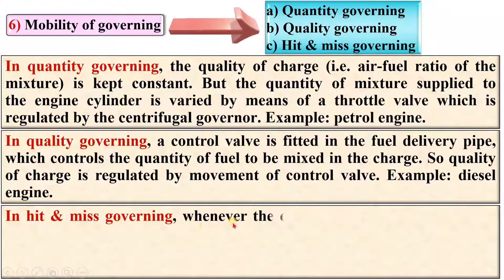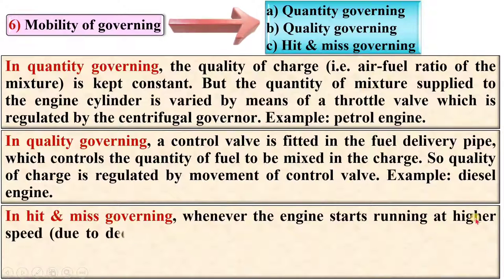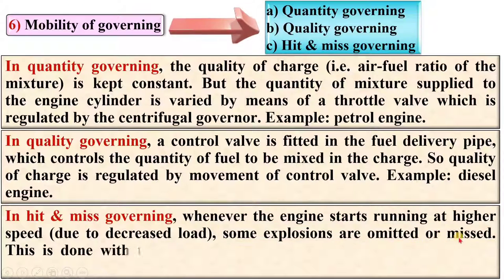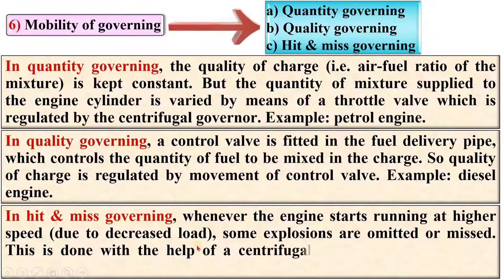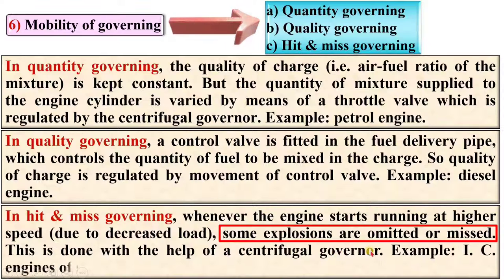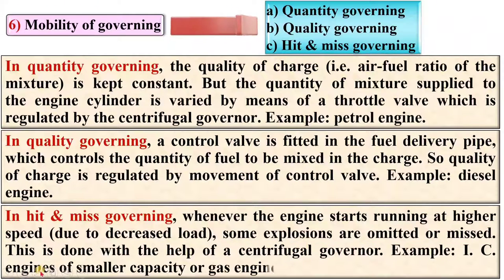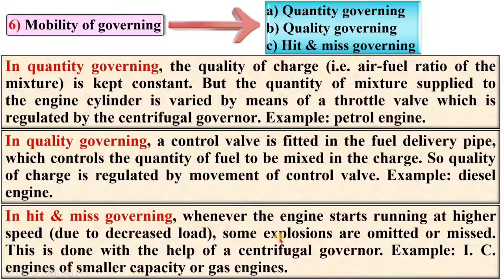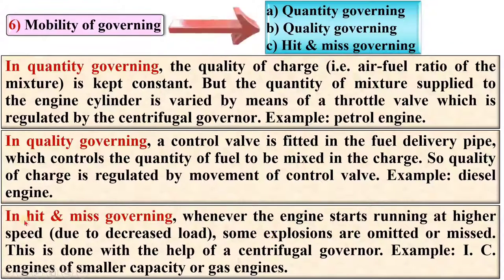In hit-and-miss governing, whenever the engine starts running at higher speed due to decreased load, some explosions are omitted or missed. This is done with the help of a centrifugal governor. Example: IC engines of smaller capacity and gas engines. In short, in hit-and-miss governing, when the engine runs at higher speed some explosions are omitted — this missing of explosions is what gives it the name hit-and-miss governing.